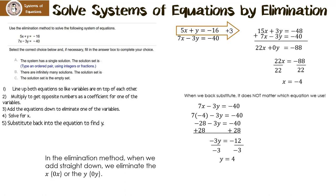Let's look at our possible answers. A: the system has a single solution — that means we have an ordered pair x, y. B: there are infinitely many solutions, meaning they're the same line. Or C: the solution set is the empty set, meaning the lines are parallel. For this one, the system has a single solution, and our ordered pair is x equals negative 4 and y equals 4.